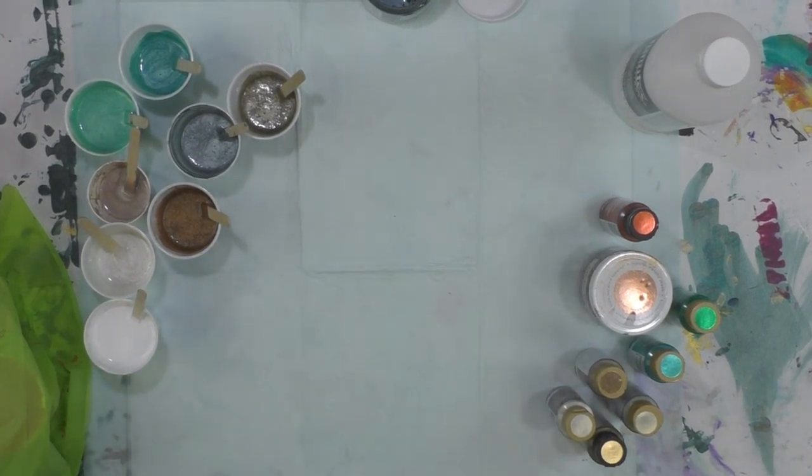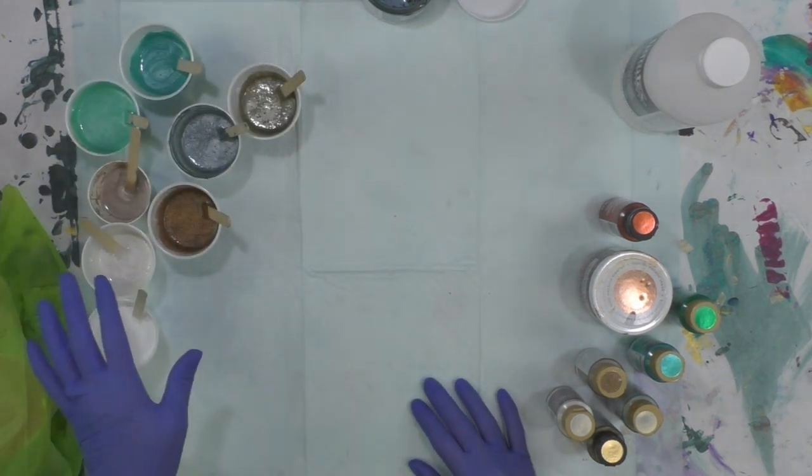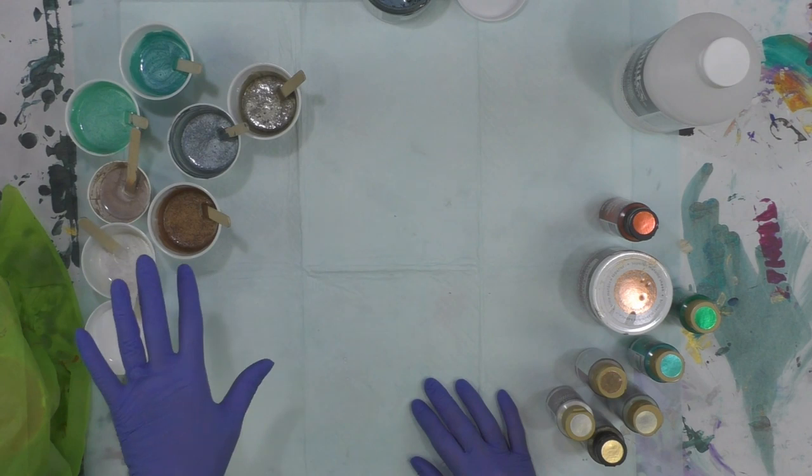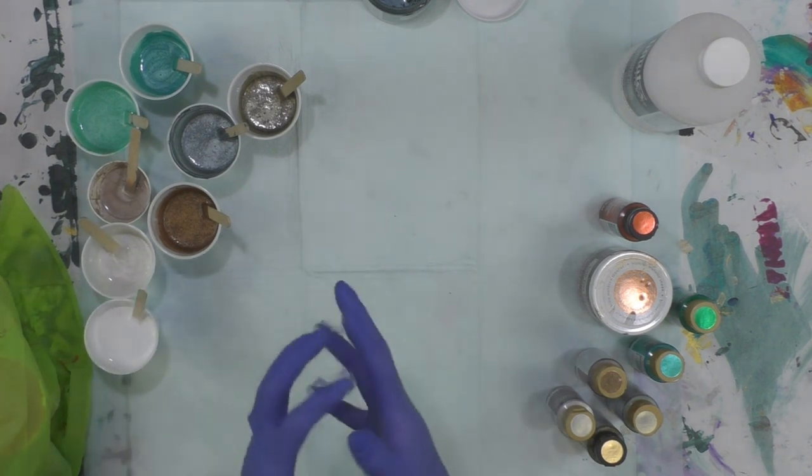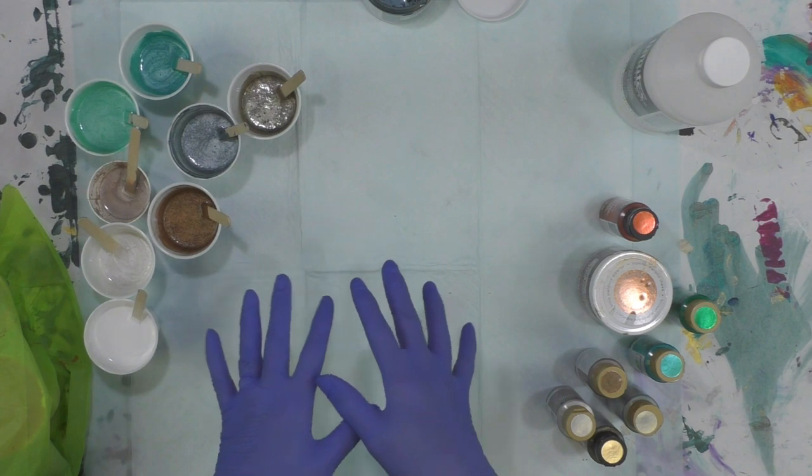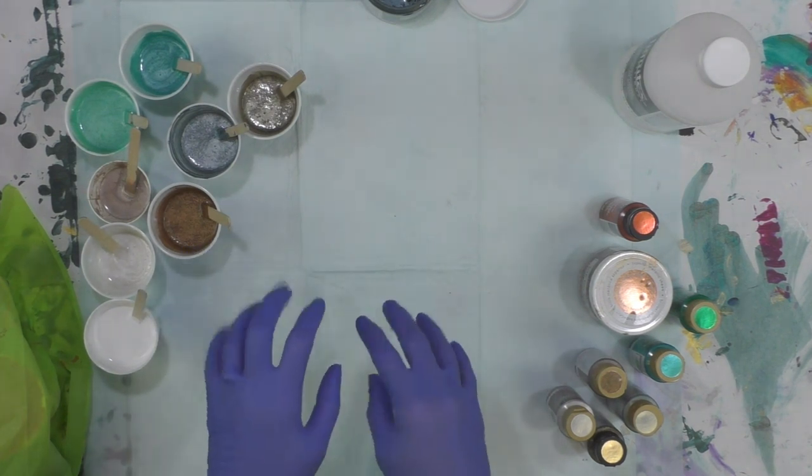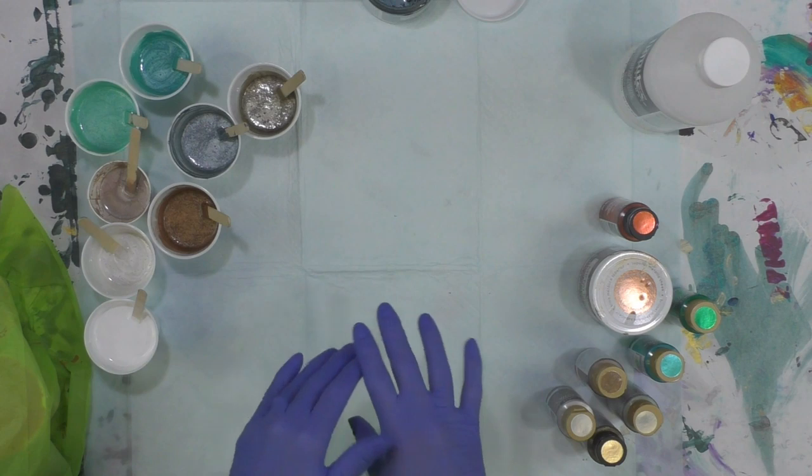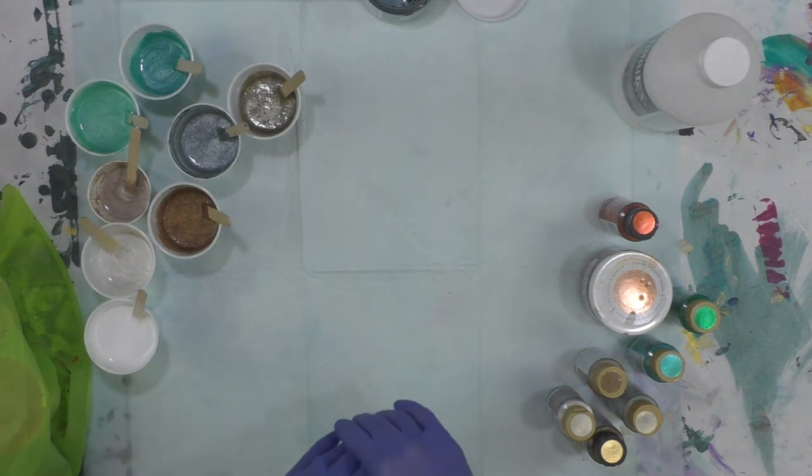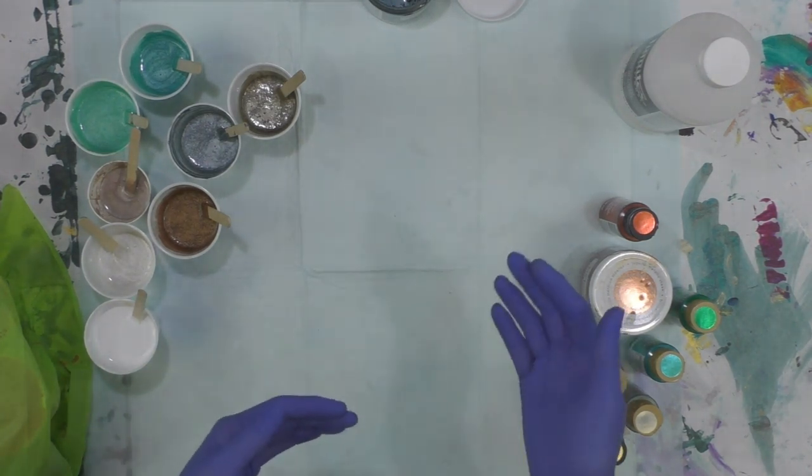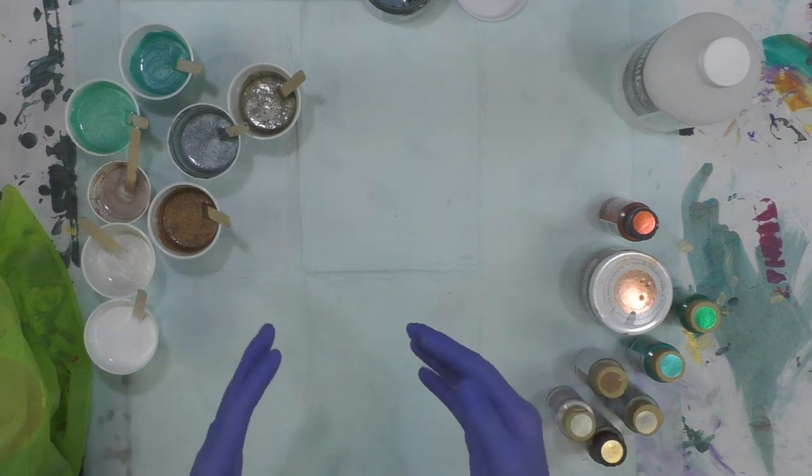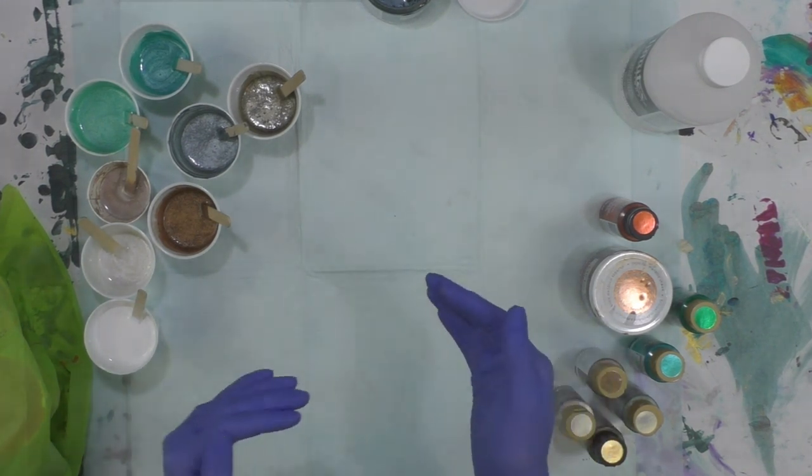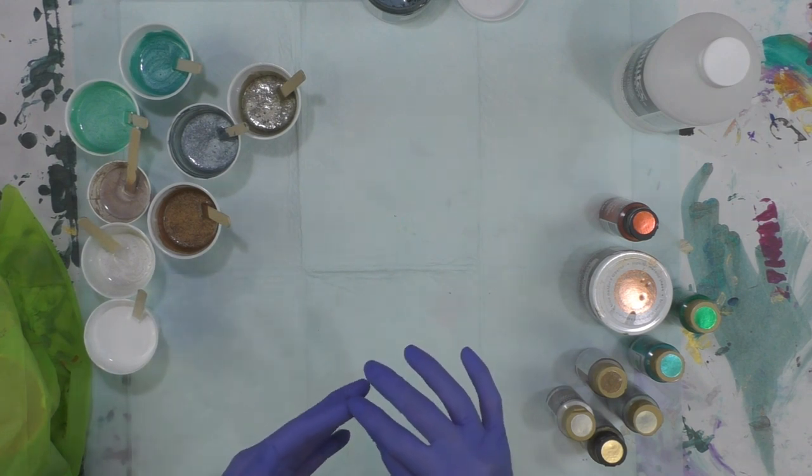Hey everybody, I hope you're doing well. I'm getting ready to do a puddle pour today on a 12 by 24 canvas using all Deco Art metallics. I chose these colors from my new bathroom in my new home. The tile has some grays and rusty colors, the walls are gray, and I've got accents of a kind of aqua to green blue.